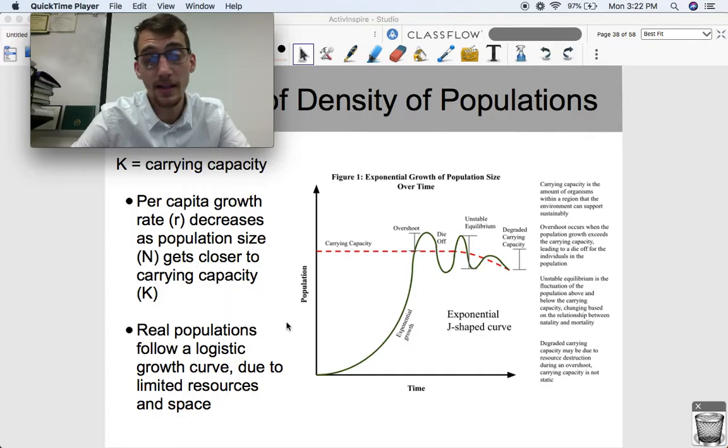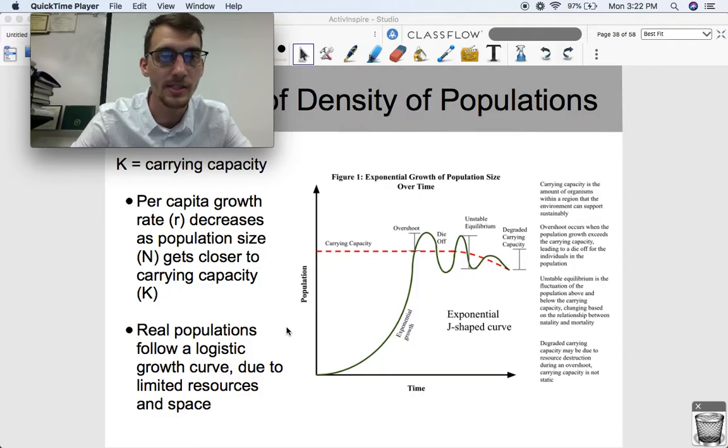Real populations, not like fake ones that have unlimited resources, space, all that kind of stuff, follow a logistic growth curve due to limited resources and space.